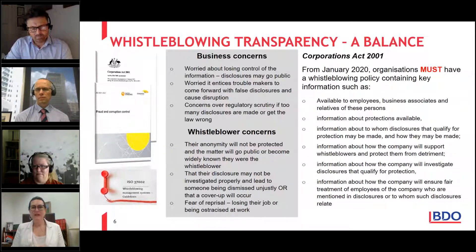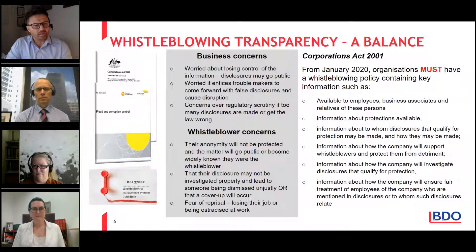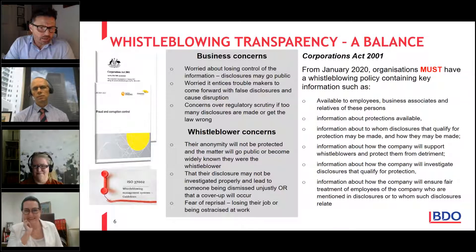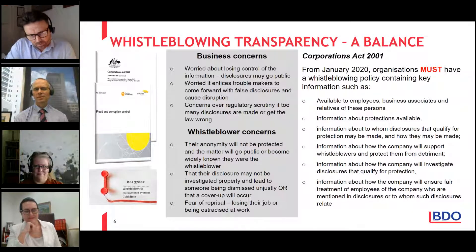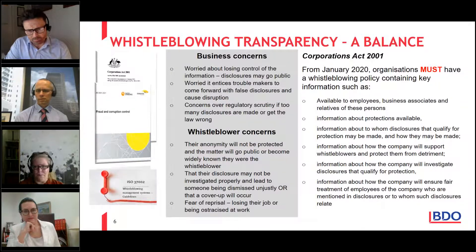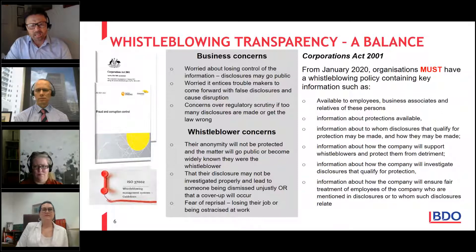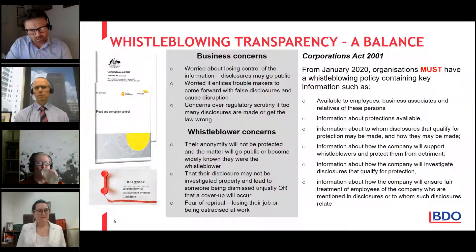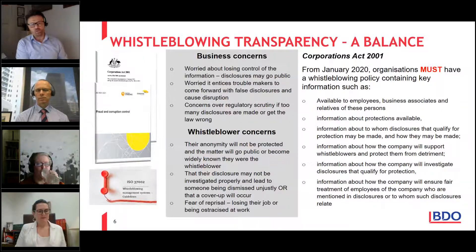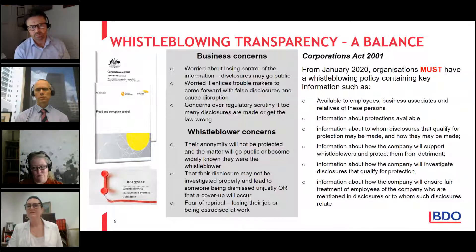ASIC is the private sector whistleblowing regulator. It has several regulatory guidances in relation to whistleblowing, and the important one is RG 270 — Regulatory Guidance 270 — which talks about the whistleblowing policy mandated under the Corporations Act. The screen shows the requirements under the Act and what must go into a whistleblowing policy. I understand that ASIC recently wrote to CEOs after a 12-month audit of adherence to the new legislation. Jane, can you comment on what the letter contained and what failings ASIC observed in policies after 12 months?